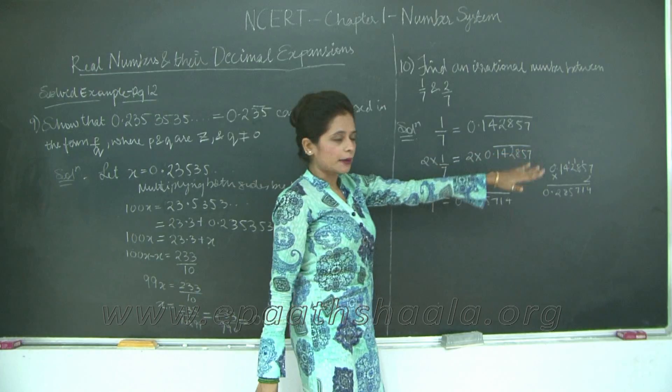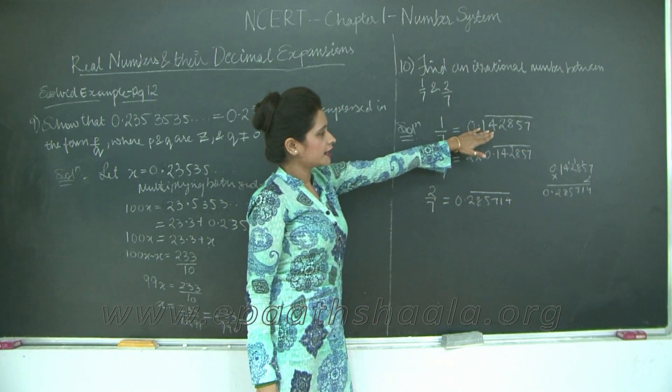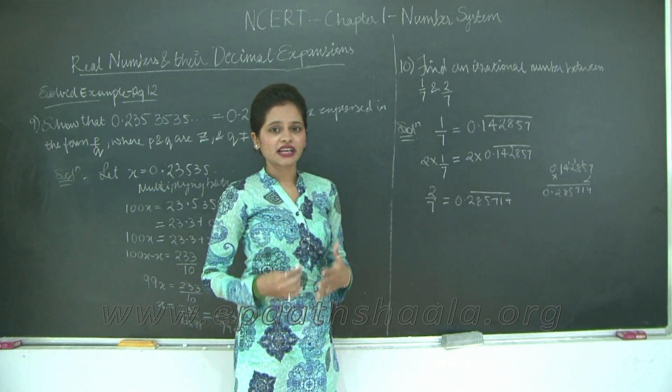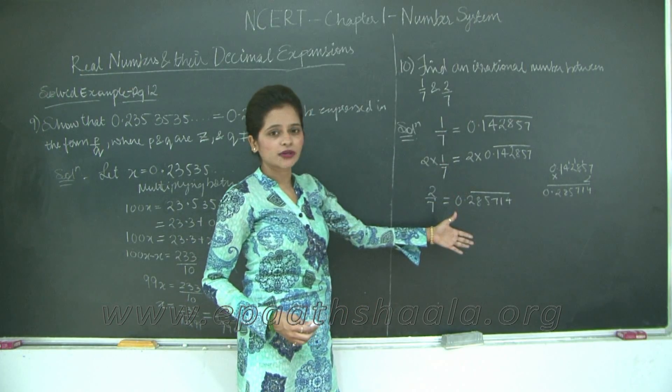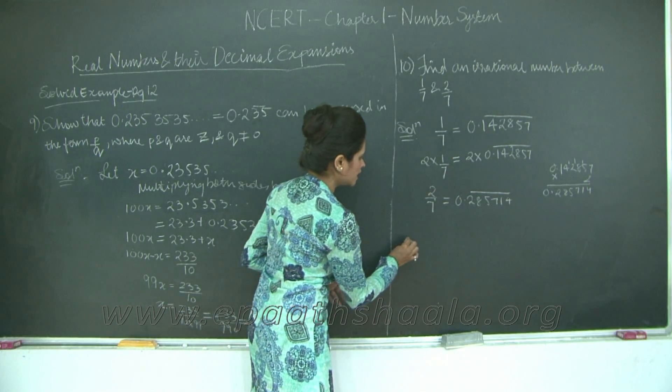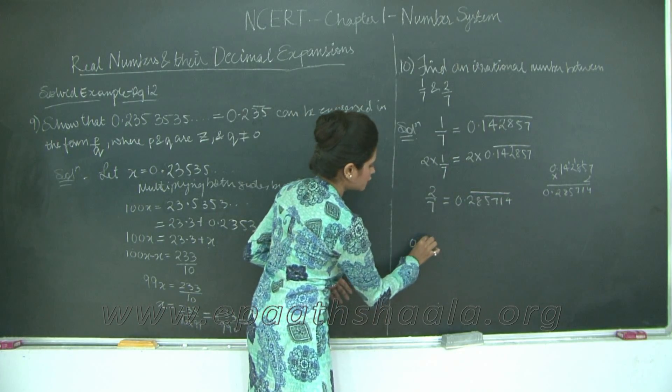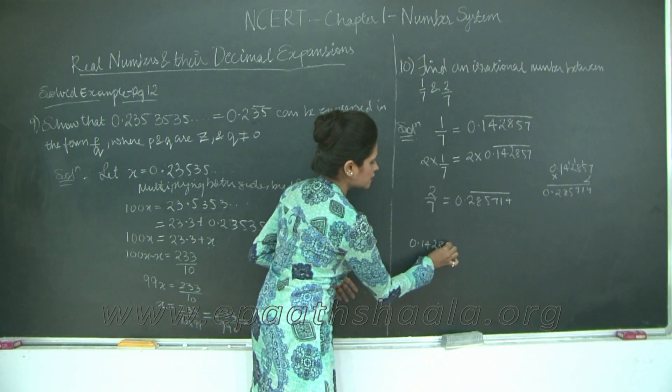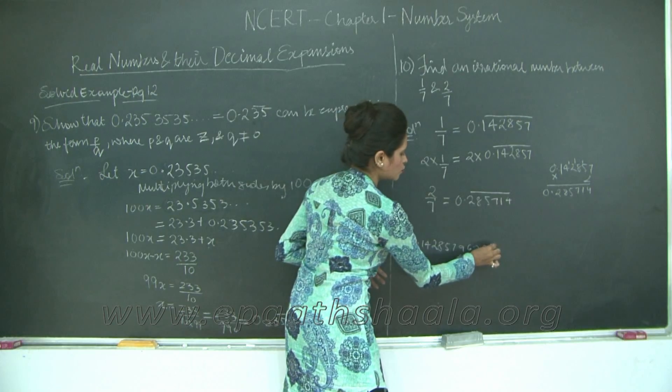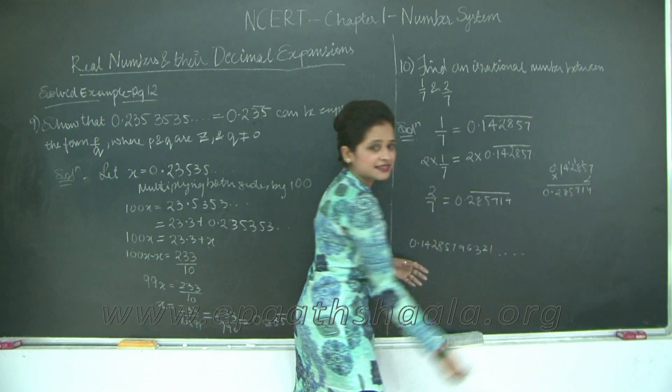Now we need to find a number such that it lies between these two numbers and it is irrational. We have infinite numbers of irrational numbers between these two because the pattern is not going to repeat. So let us say one of these could be 0.14285796321. The list is endless.